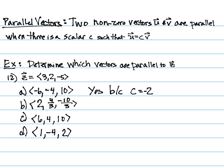For B, a C value of two-thirds allows the relationship to hold — so B is parallel too. For C, the signs don't work: the first two signs need to match and the third needs to be different, but this one has all matching signs. And D doesn't work because the first two signs don't match the required pattern. So C and D are not parallel to Z.